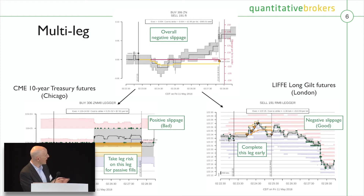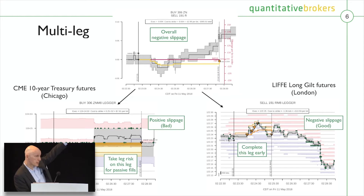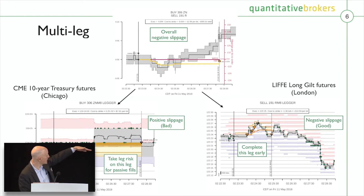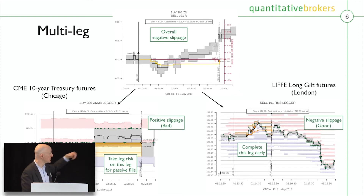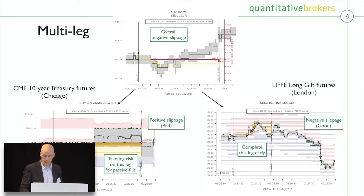We were selling in London — the price went up, so we got fills above the market. We were buying in Chicago — the price went up, so we got fills that were a little bit worse than the benchmark. But the combination of them was better, because these things are very correlated — they move together.